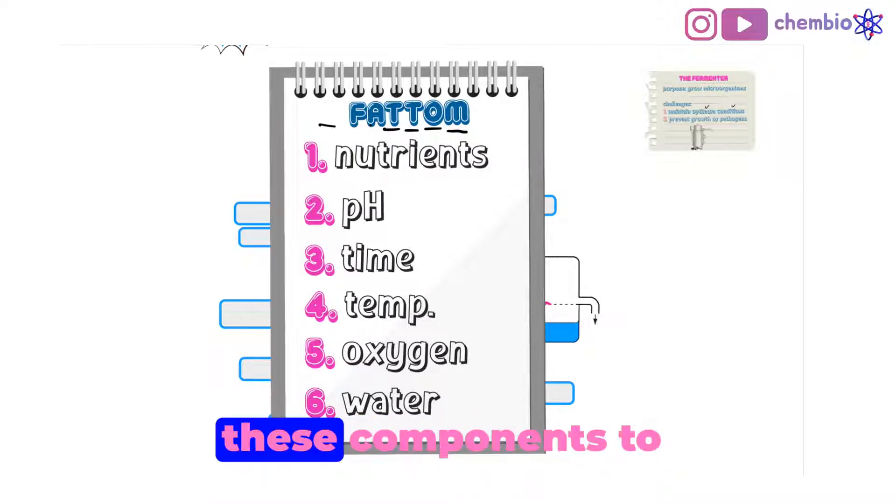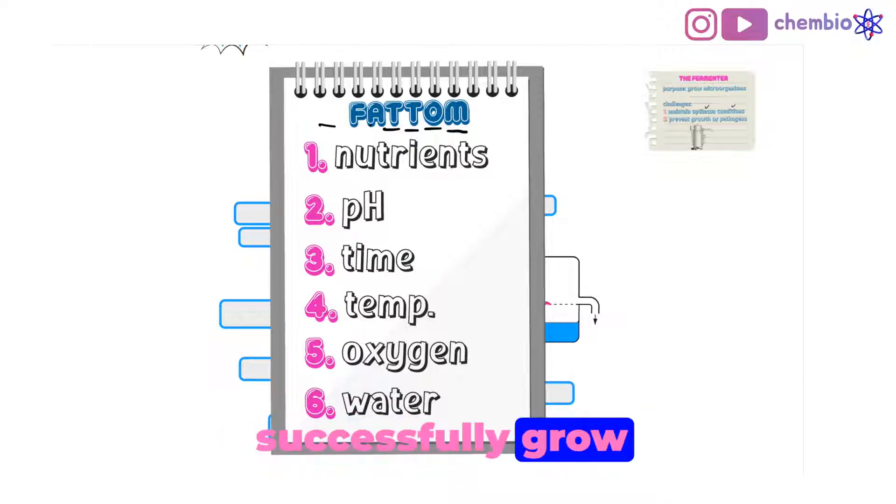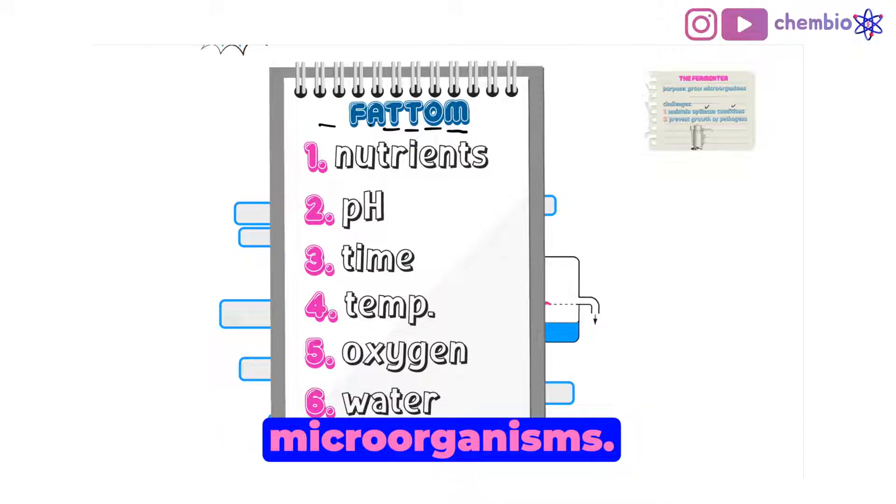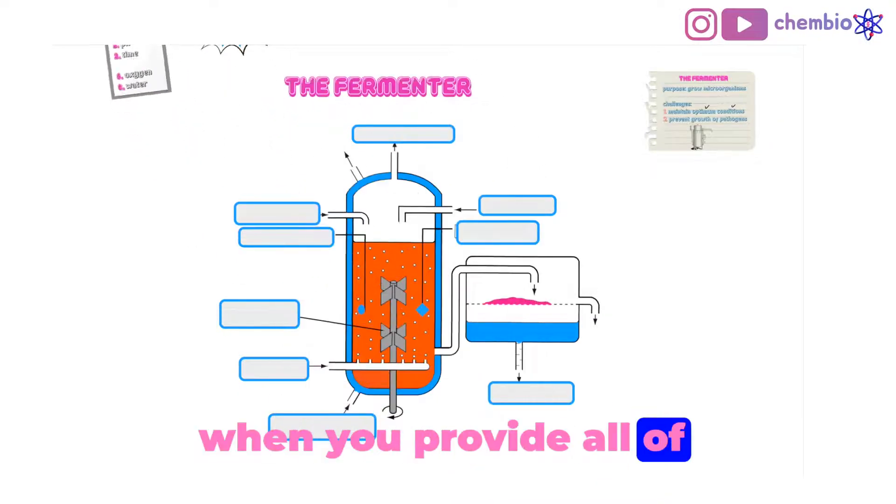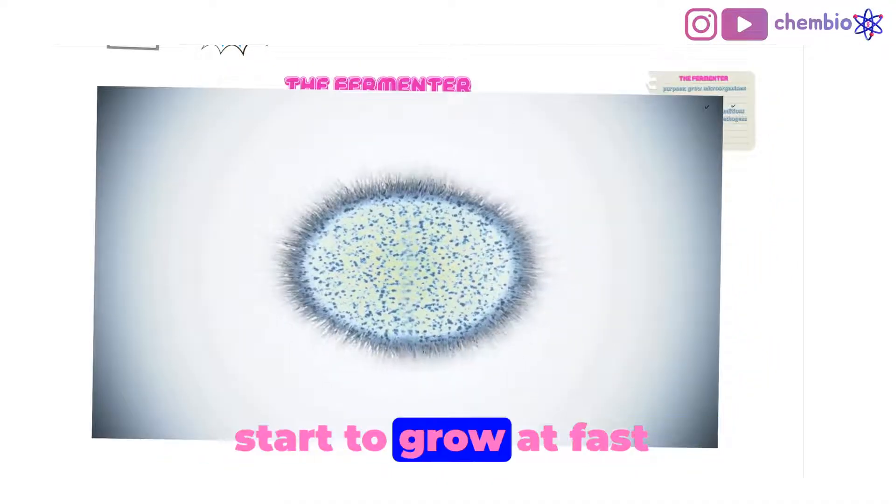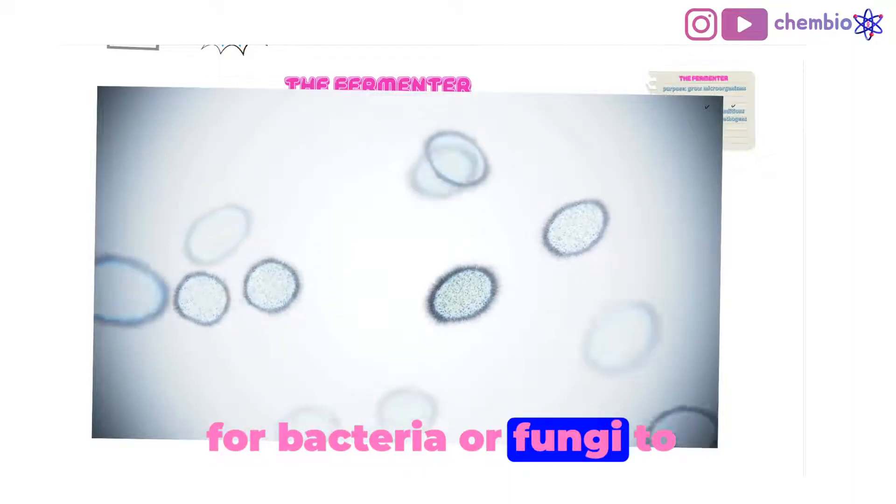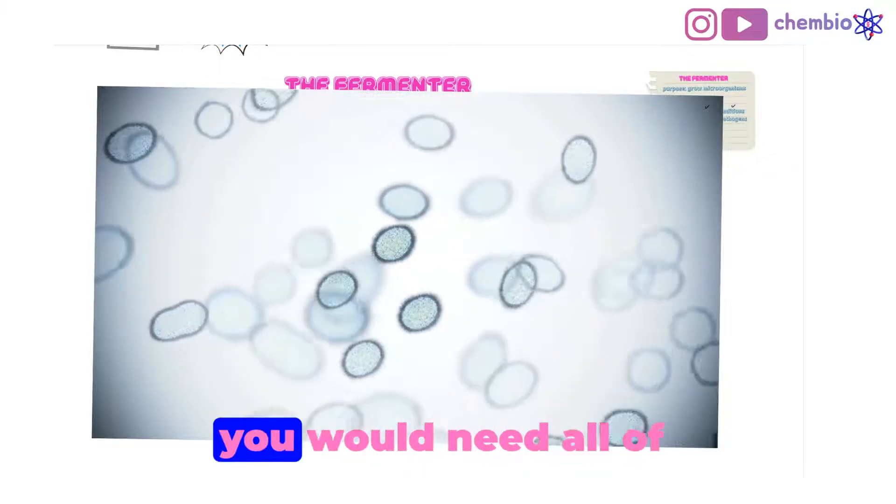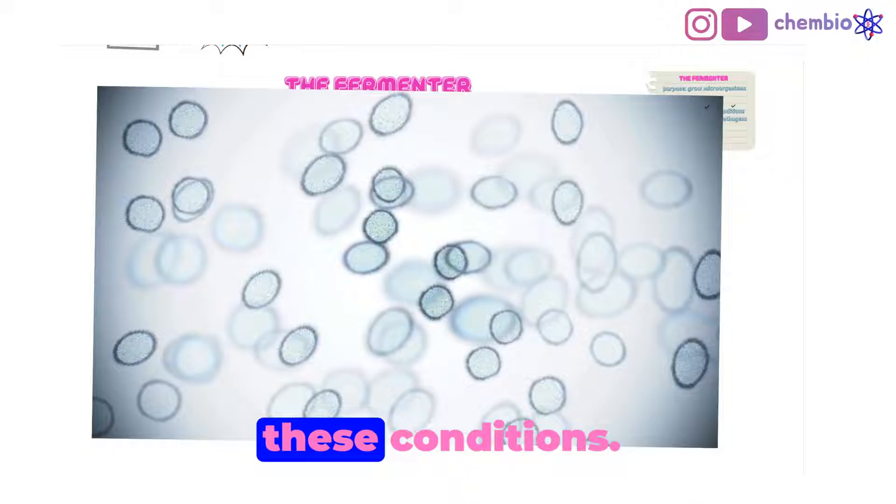You would need all of these components to successfully grow microorganisms. When you provide all of these components, the microorganisms would start to grow at fast rates. For bacteria or fungi to reproduce rapidly, you would need all of these conditions.